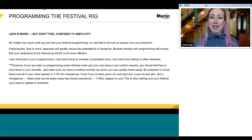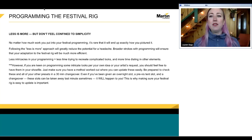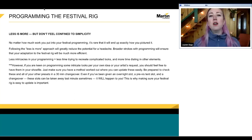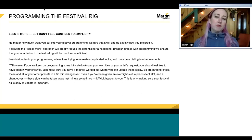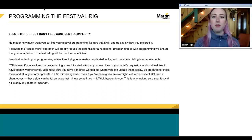There could be drastic changes between the show file rig and the actual festival rig. You might program 24 spots and show up to find only 8, or program 24 beams and find 68. There could be no strobes, or no spots and all beams. You have to think about how you want to clone or use your festival programming. Practice playback of your show with different scenarios — patch other fixtures and see what it would look like if you clone to them.